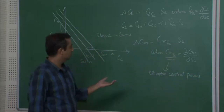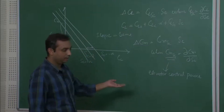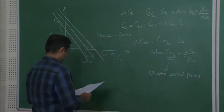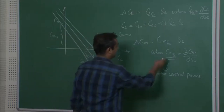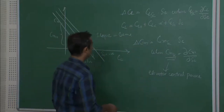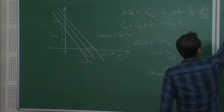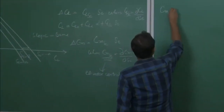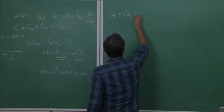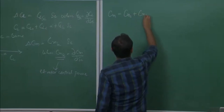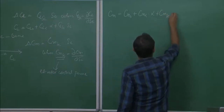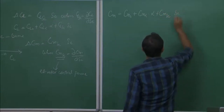The term CM_δE is known as elevator control power. How effective your control surface or elevator is, is determined by this aerodynamic coefficient. A larger value of CM_δE gives you more control over the pitching moment. The total pitching moment of an aircraft is given by CM = CM0 + CM_α × α + CM_δE × δE.